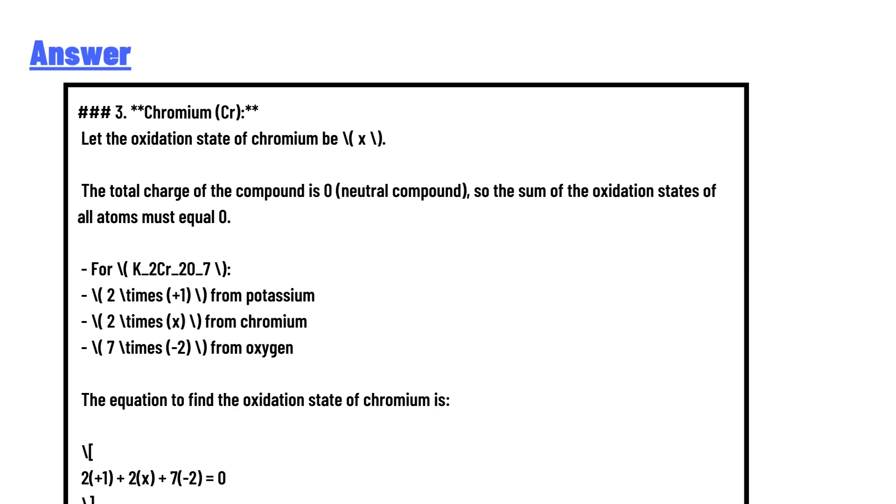must equal zero. 2 times (+1) from potassium, plus 2 times (x) from chromium, plus 7 times (-2) from oxygen. Solving this equation to find the oxidation state of chromium, here's the calculation: